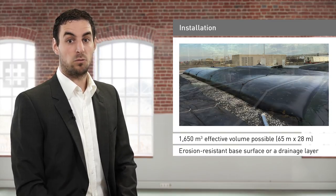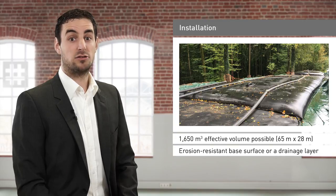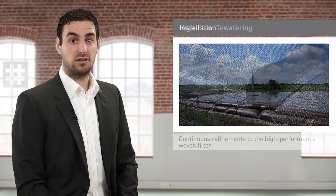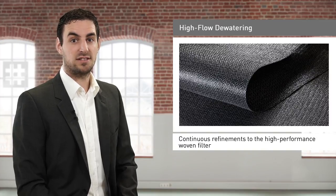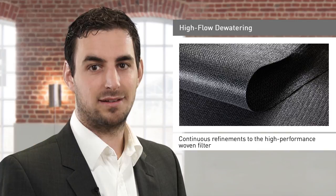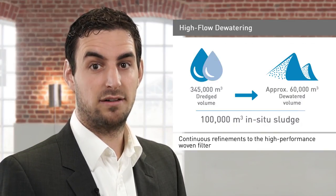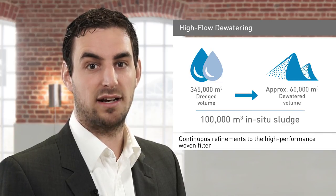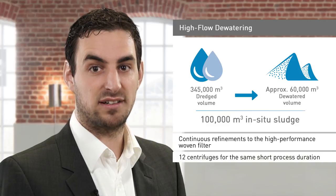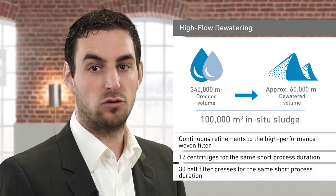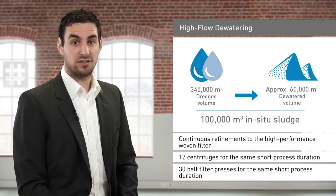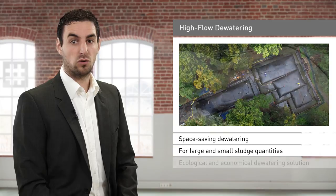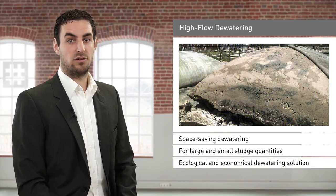On specific projects, depending on the available space and sludge properties, it may also be possible to stack tubes in several layers. Continuous refinements to the high-performance woven filter used for the tubes have made it possible to progressively boost dewatering performance over the last few years. To achieve a dewatered sludge volume of 60,000 cubic metres in situ sludge, or a dredged volume of 345,000 cubic metres within the same short period as a Soil-tane dewatering tube, it would be necessary to deploy around 12 centrifuges or 30 belt filter presses. Soil-tane tubes offer the combined advantages of rapid and space-saving dewatering for large and small sludge quantities, thus providing an innovative and practical solution in both ecological and financial terms.